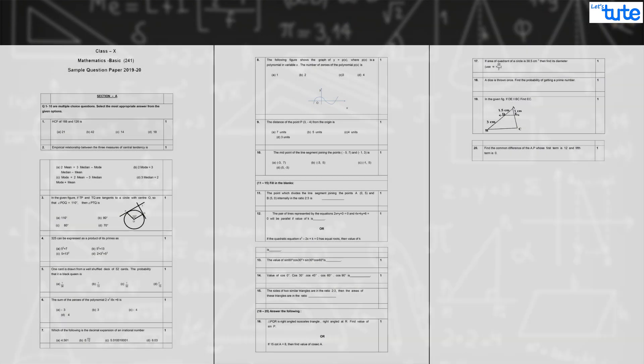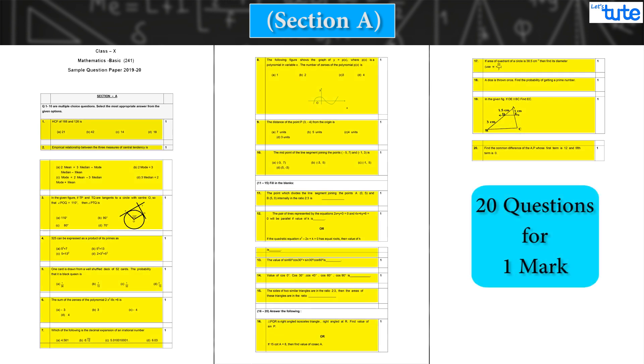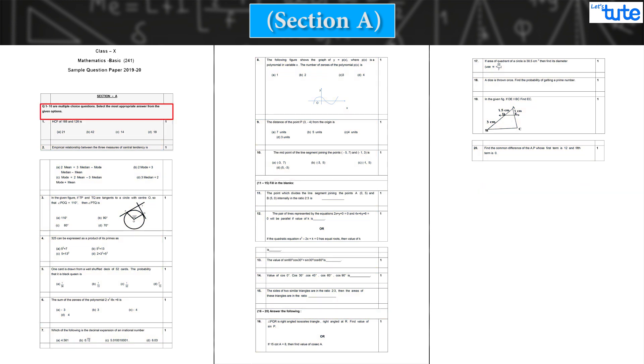In section A here you will get 20 questions for one mark each. These questions are divided into three different formats. First you will get 10 multiple choice questions, next five questions will be fill in the blanks, and from question 16 to question 20 you will have to solve the question for one mark with two to three steps. You will also get an internal choice in one question.